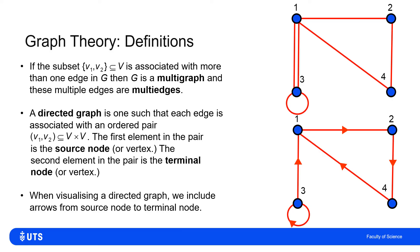So if I visualize a directed graph, I also need arrowheads pointing from the source node to the terminal node.